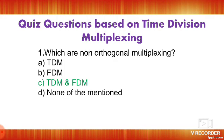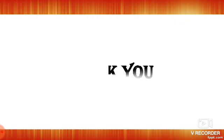A quiz question: which are non-orthogonal multiplexing methods? Frequency division multiplexing (FDM) is also orthogonal multiplexing. Both TDM and FDM are orthogonal multiplexing, so option C is the correct answer. That's all about time division multiplexing. Thank you.